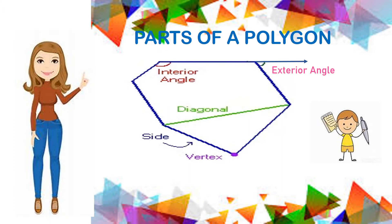Parts of a polygon: these line segments are called the sides of a polygon. The point of intersection of the line segments is called a vertex. In this figure there are six vertices.